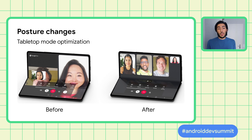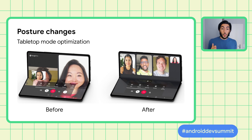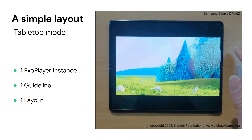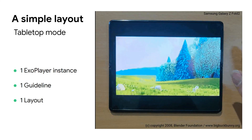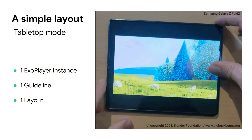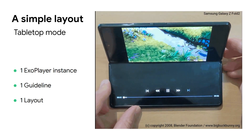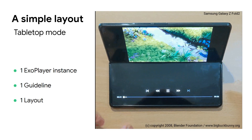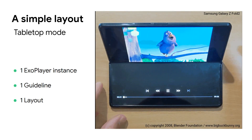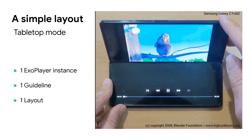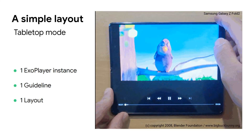A great example is the optimization that the Google Duo team did on their app to work well on tablets and foldable devices. In this session, we will see how to build a very simple layout that contains a single ExoPlayer instance that automatically resizes during posture changes with a nice animation.